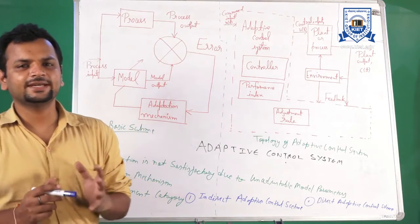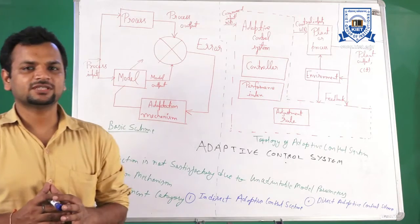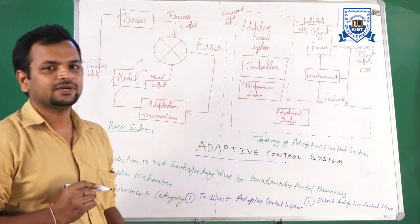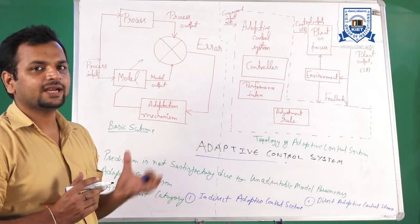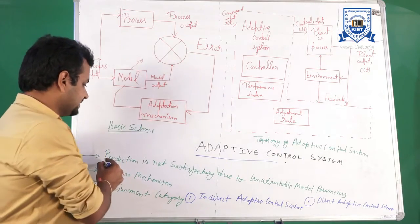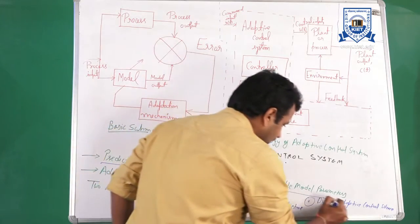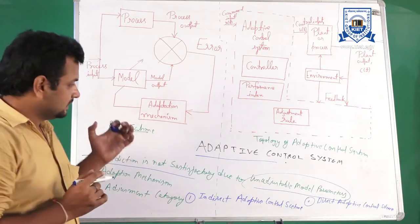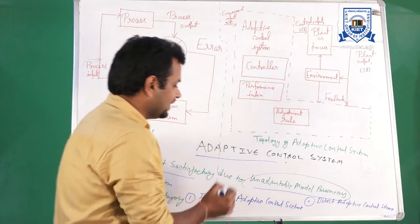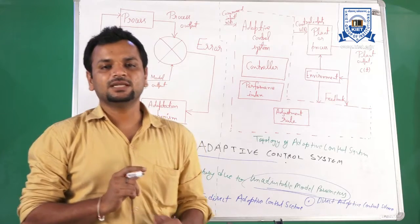In the last class we studied about the predictive control strategy. There are certain disadvantages in the predictive control strategy. In predictive control, we predict the process dynamics with the help of previous inputs and outputs, but the prediction is not satisfactory due to unadjustable model parameters. That means if your output does not reach the desired value, there is a certain error due to unadjustable model parameters.